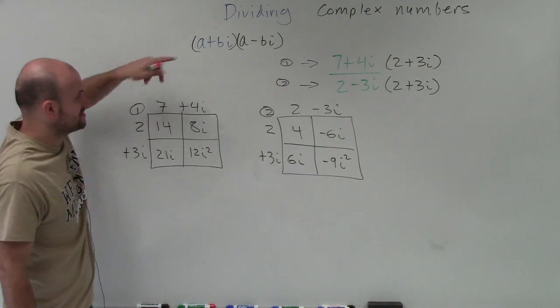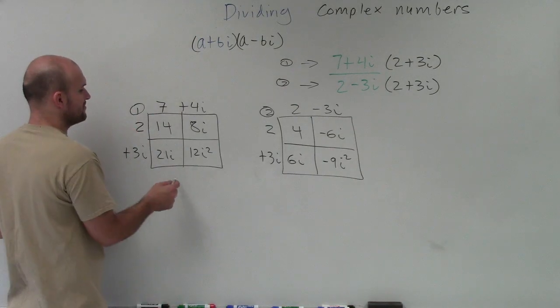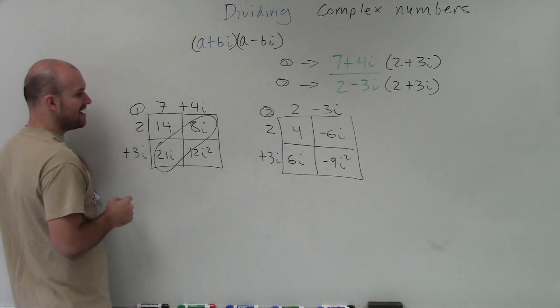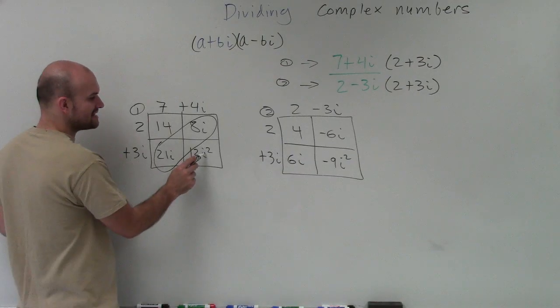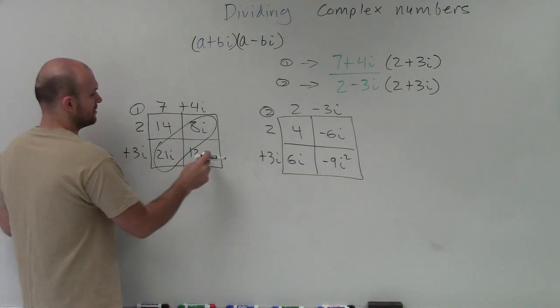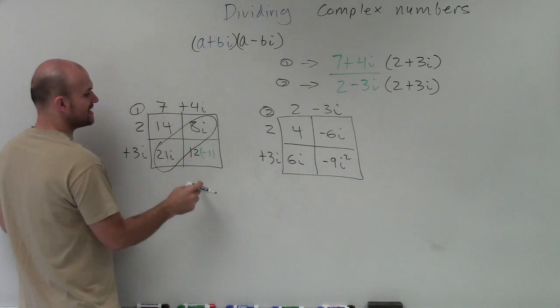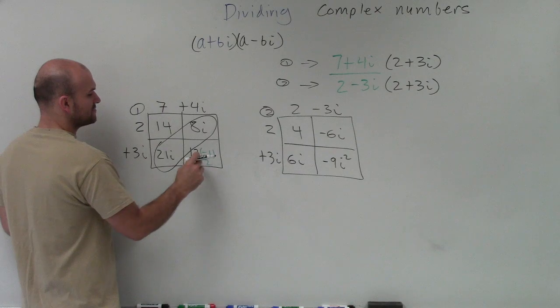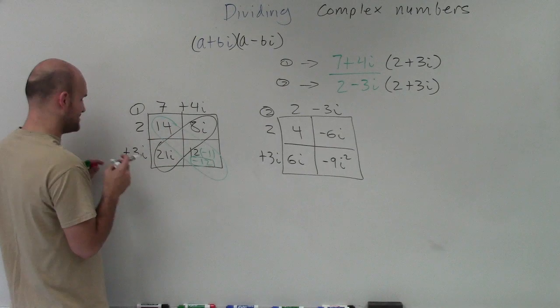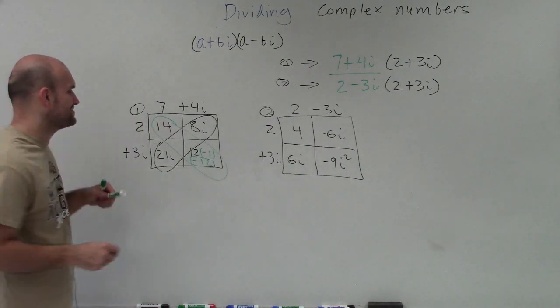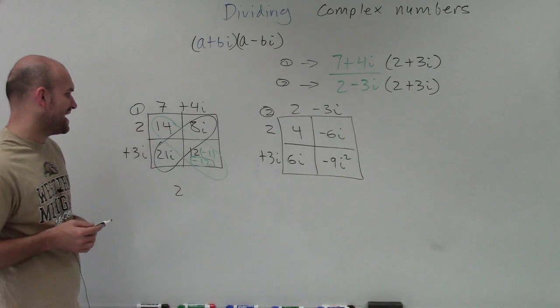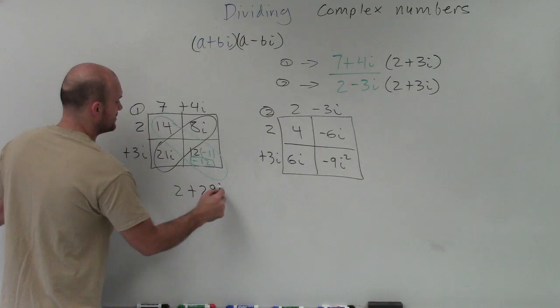All right. So remember, this is my numerator. So let's just go and simplify this. The nice thing I like about the box method is I notice that these two have i, which we can combine. And then this, i squared, we can rewrite as negative 1. Well, 12 times negative 1 equals negative 12. Therefore, now, these two are numbers. And I can combine these two. So I have 14 minus 12, which is going to be 2. And then 21 plus 8i is going to be positive 29i.